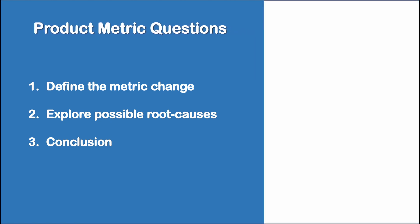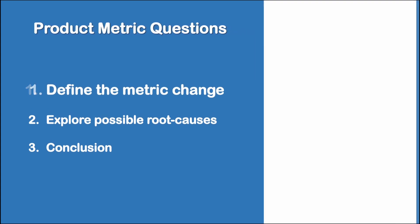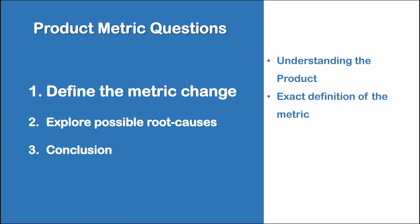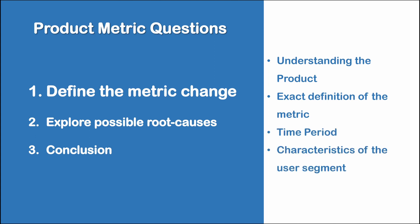Step one is to define the metric change. Many candidates skip this step and start listing ideas in an unstructured way, which is a big red flag for your interviewers. Before starting to answer the question, you need to define the metric change in detail. This often entails asking for three pieces of information: one, the exact definition of the metric; second, the time period over which the metric has changed; and third, the characteristics of the user segment impacted by the change.